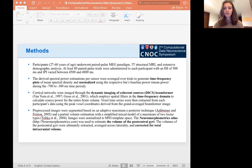Voxel time series were then extracted from each participant's data. As for the structural MRI, pre-processed images were segmented based on an adaptive maximum a posteriori technique and normalized to MNI template space. The neuromorphometrics atlas was then used to estimate the volume of the postcentral gyri, and the volumes of the postcentral gyri were ultimately extracted, averaged across laterally, and corrected for total intracranial volume.